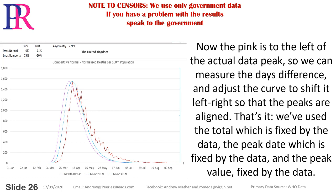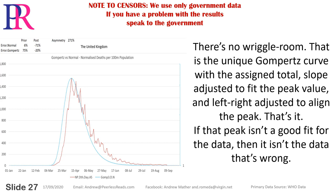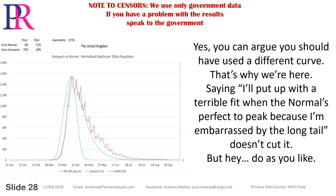Hence we do C first. Now the pink is to the left of the actual peak date, so we can measure the days' difference and adjust the curve to shift it left-right so that the peaks are aligned. That's it. We've used the total — fixed by the data — the peak date — fixed by the data — and the peak value — fixed by the data. There's no wriggle room. That is the unique Gompertz curve with the assigned total, slope adjusted to fit the peak value, and left-right adjusted to align the peak. If that isn't a good fit for the data, then it isn't the data that's wrong.